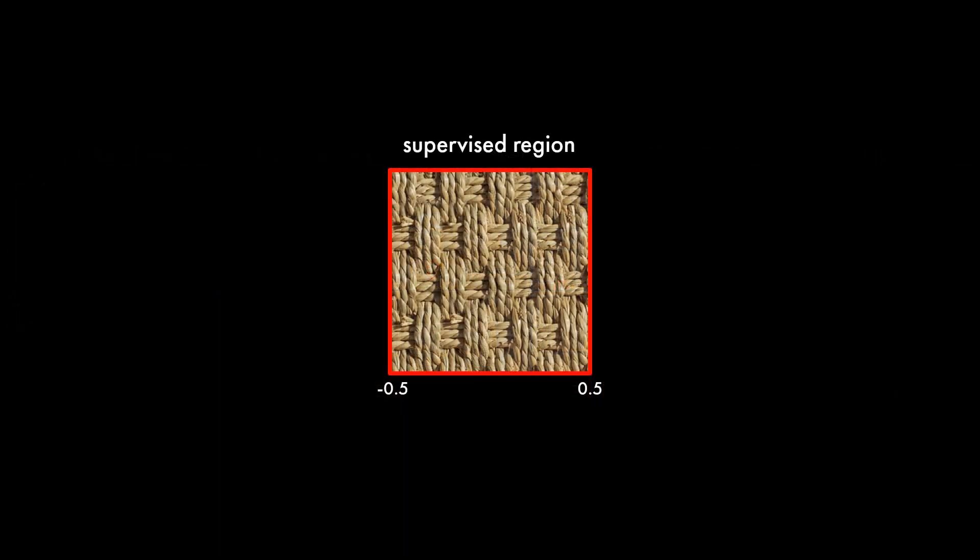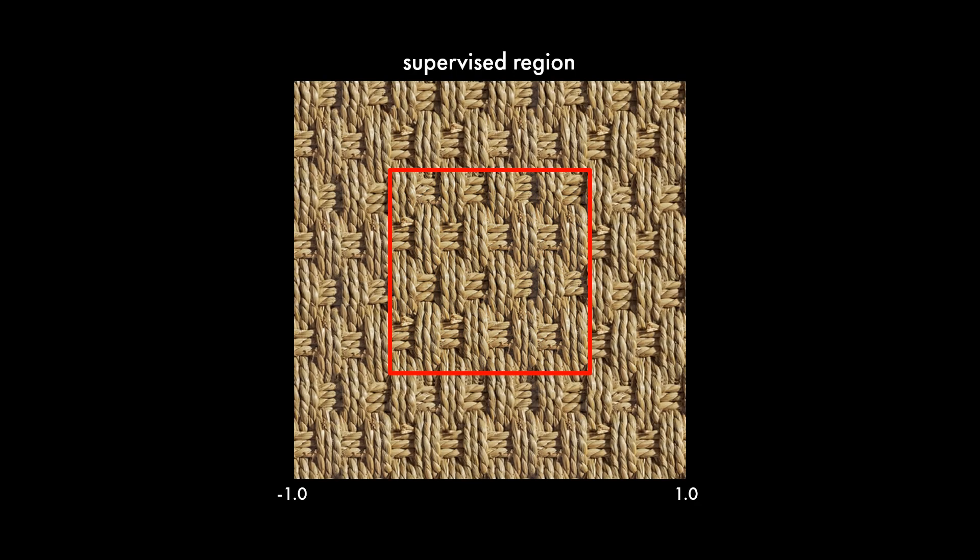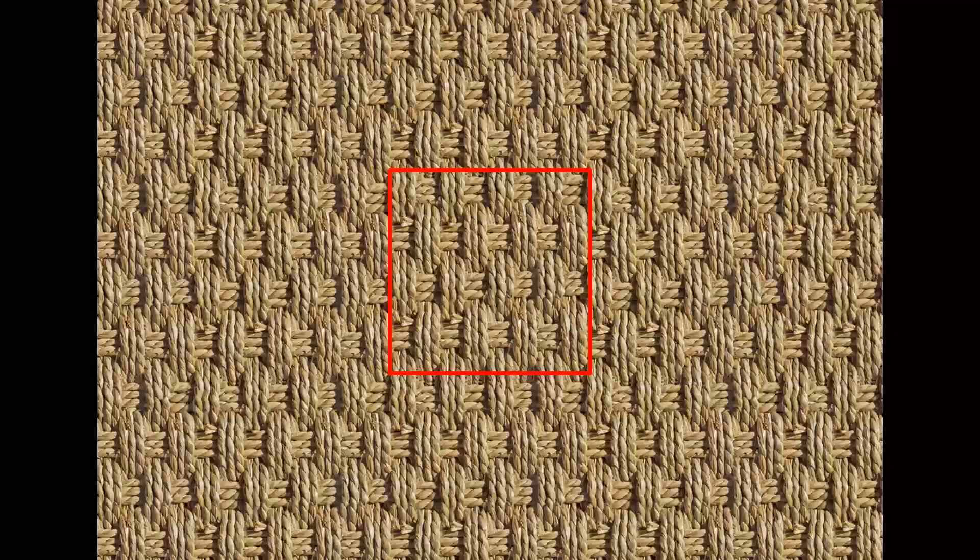Since BACON is designed to represent discrete frequencies, the output is periodic. Here, we discretize the frequencies such that BACON has a period matching the input domain of this seamless texture. Querying the network outside of the trained coordinates results in periodic extrapolation behavior.